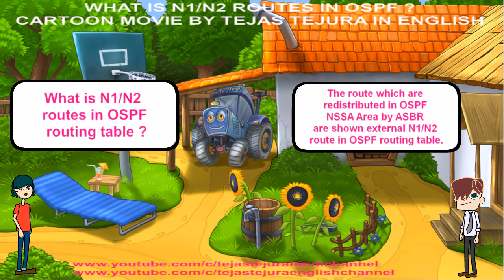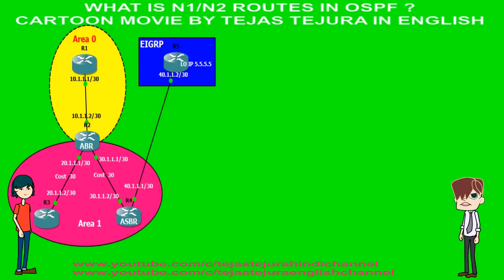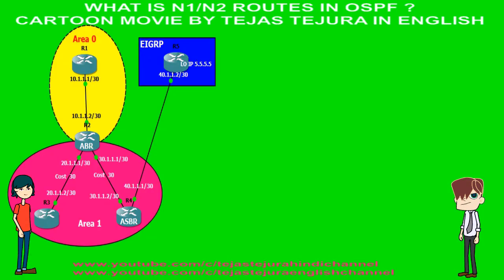Tejas, still it is not clear. Can you explain with some example? Oh sure Deeple, look at this diagram. I already configured the IP address of all the devices. Now I will start the OSPF, EIGRP, NSSA area and redistribution configuration.